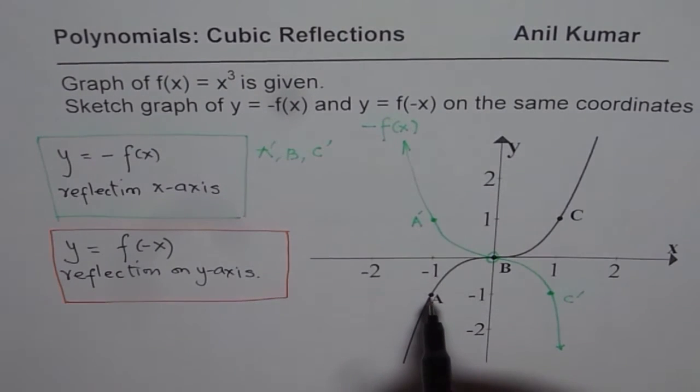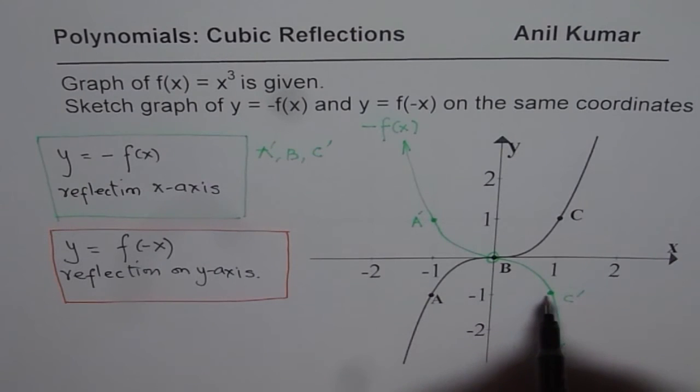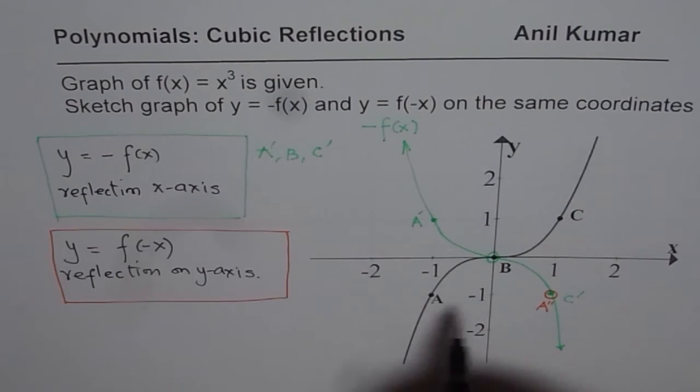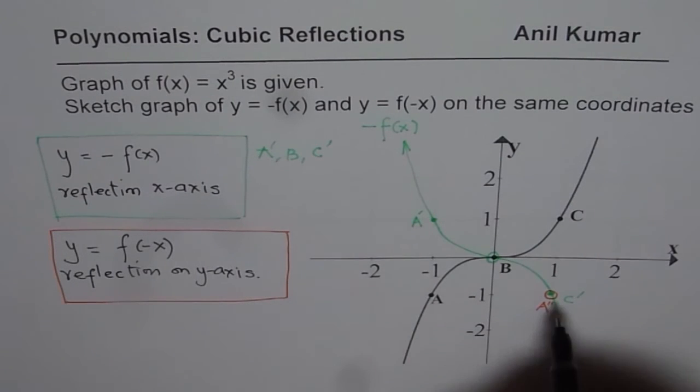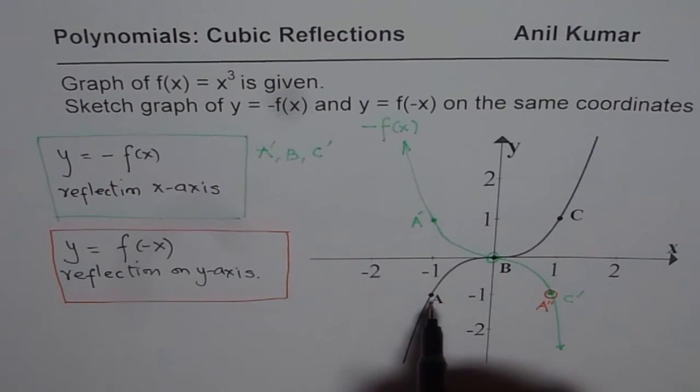Now, when I reflect A on the y-axis, so it comes on this side. So that will be the point. And we are calling this as A double dash, the second function. So that is the point, which is reflection on y-axis for A. B remains exactly the same place.